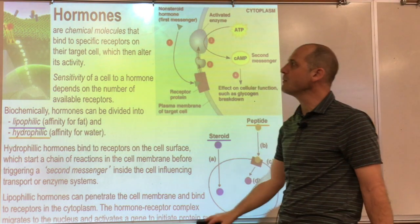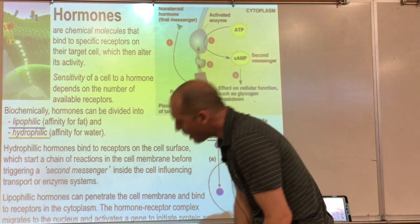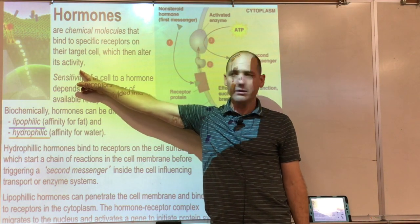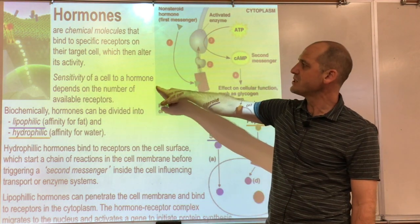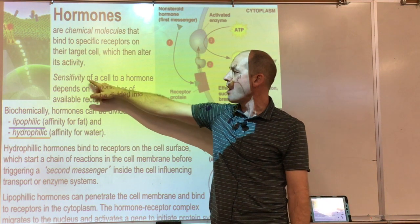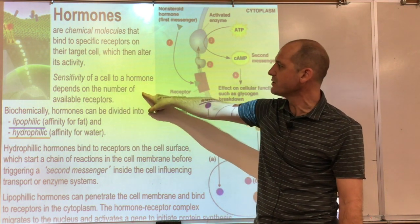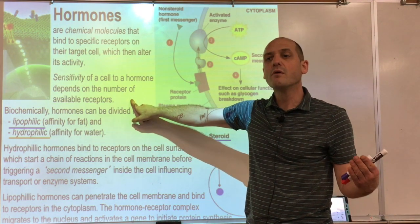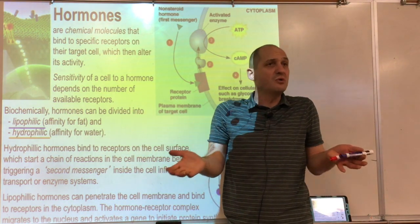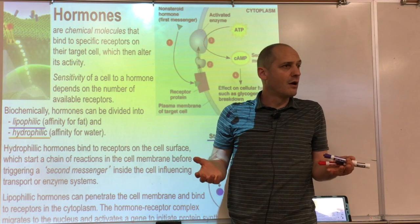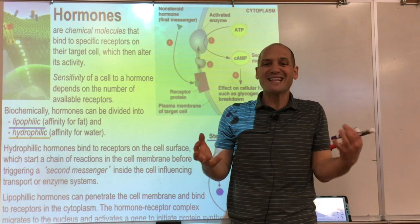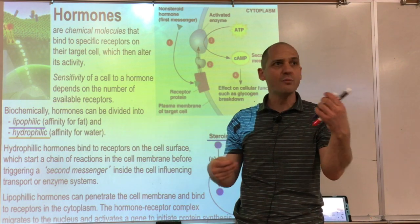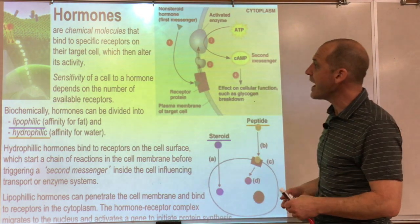Hormones are chemical molecules that bind to specific receptors on target cells and alter the activity of that cell. The sensitivity of a cell to a hormone depends on the number of available receptors. If a cell has no receptors, the hormone can't communicate with it. If you want a strong reaction from a cell, you put a lot of receptors there, so many hormones can attach — producing a strong response.